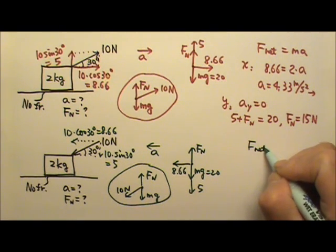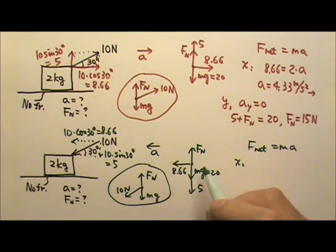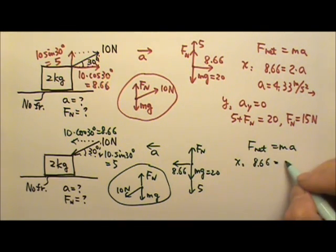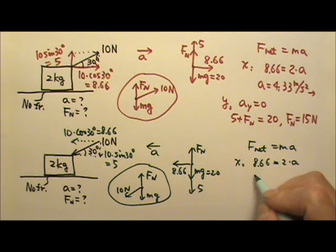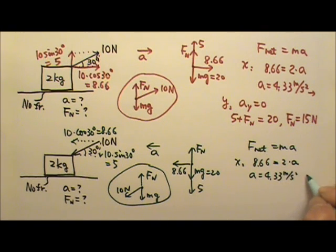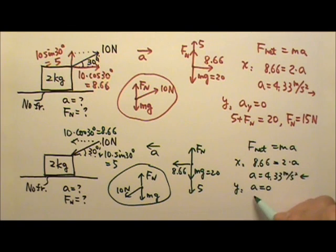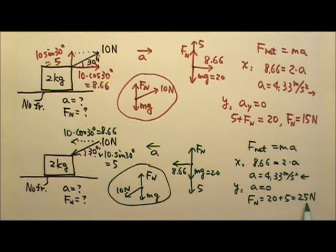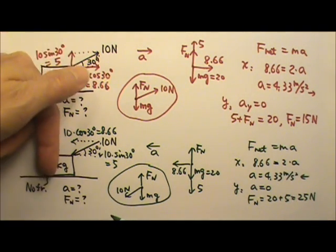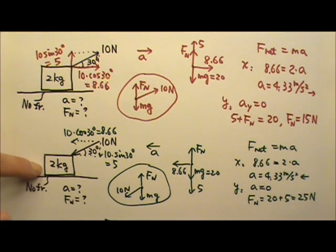So when you write net force equals MA in the x direction, it will be only 8.66, and that equals M times A. So the acceleration is 4.33 meters per second squared — it's just that it's to the left. In the y direction, the acceleration is zero, so upward and downward forces are equal. The normal force is 20 plus 5, which is 25 newtons. It makes sense — the box weighs 2 kilograms, and this force pushes down on it with 5 newtons, making the box seem 5 newtons heavier to the table: 25 newtons.